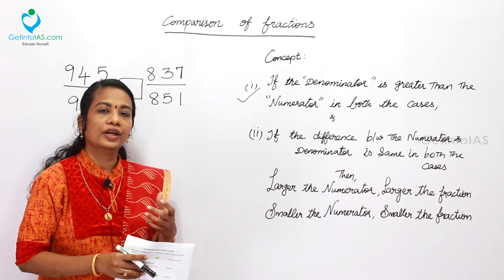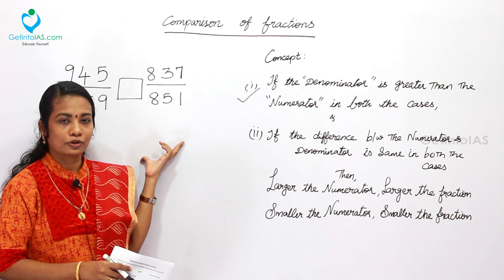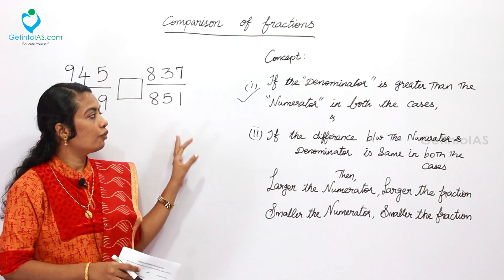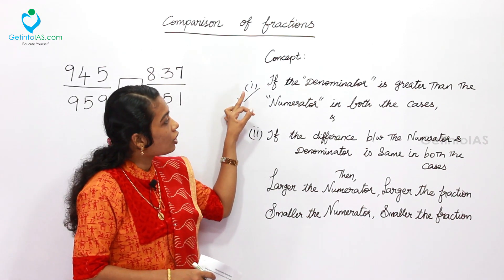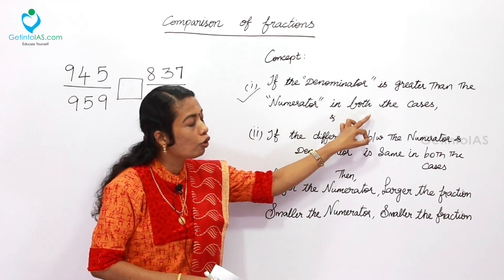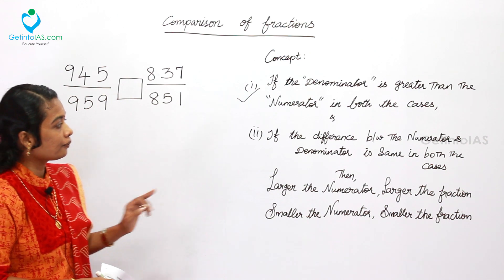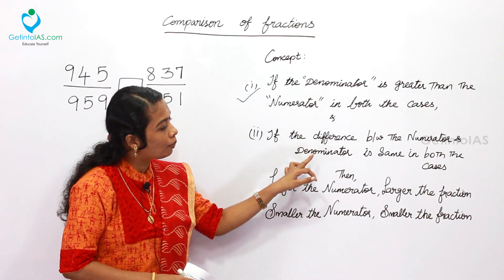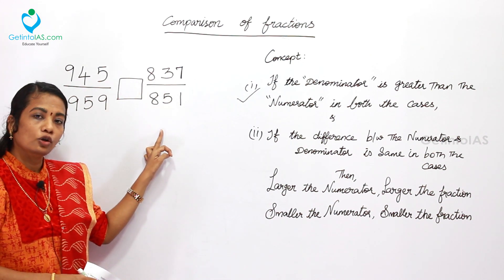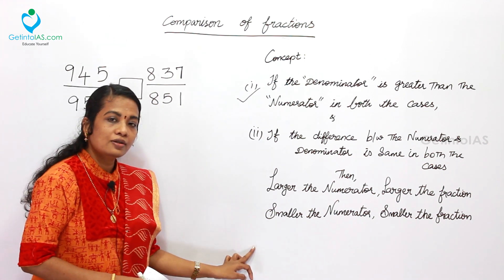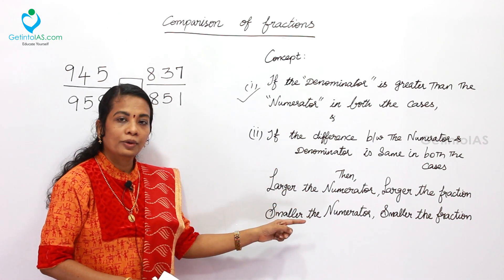In the previous question we had various fractions, but here only two numbers are given — large numbers where cross multiplication is not easy. We have a concept as a tool for these cases. The first condition: the denominator must be greater than the numerator in both fractions. The second condition: the difference between numerator and denominator must be the same in both cases. If both conditions are satisfied, larger the numerator, larger the fraction; smaller the numerator, smaller the fraction.